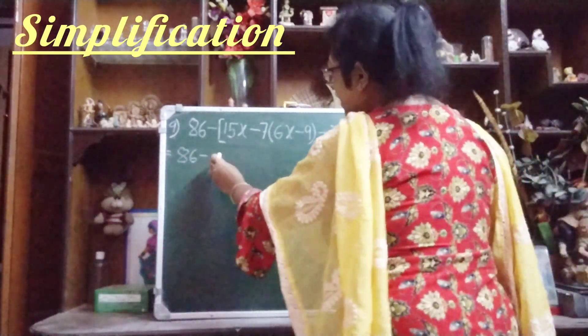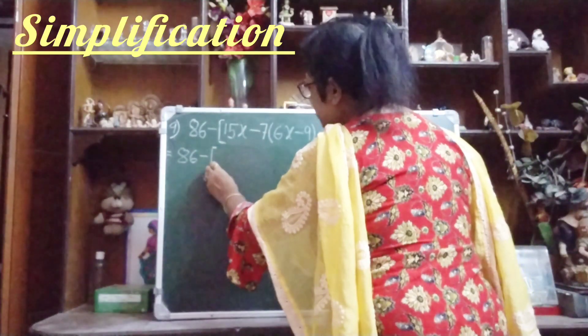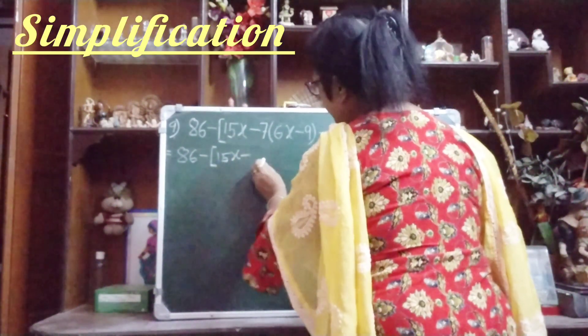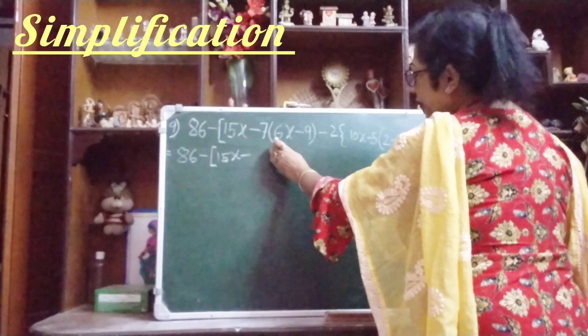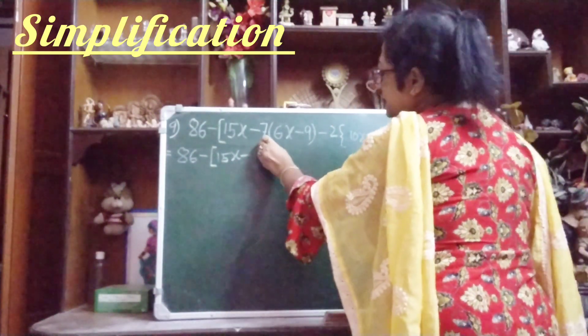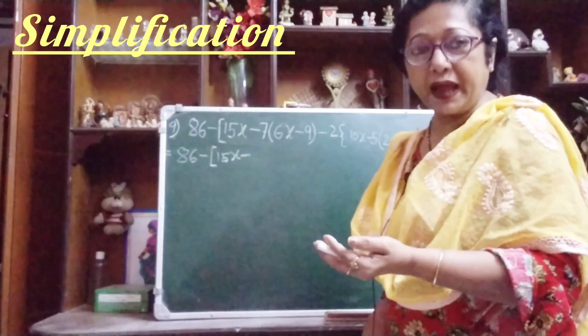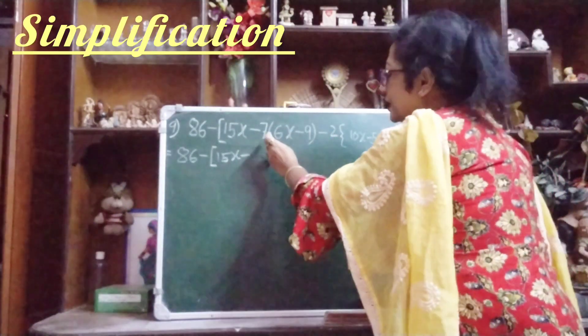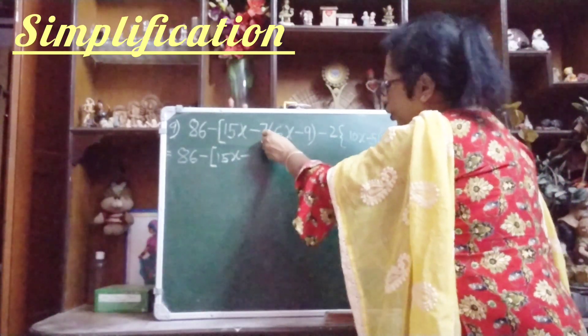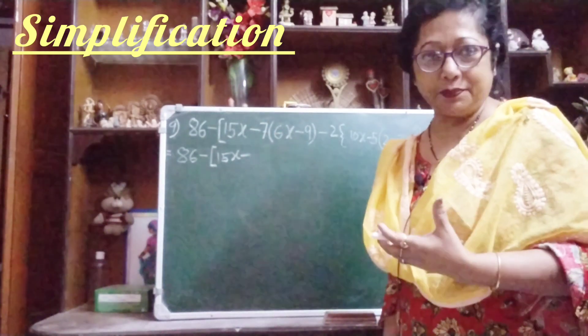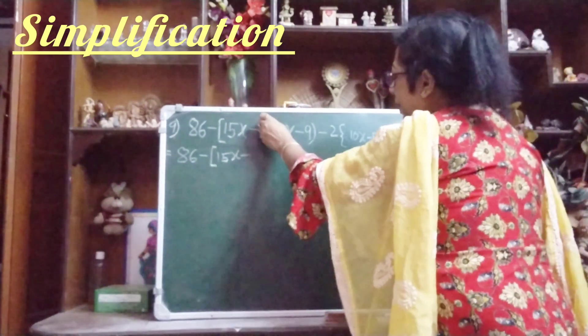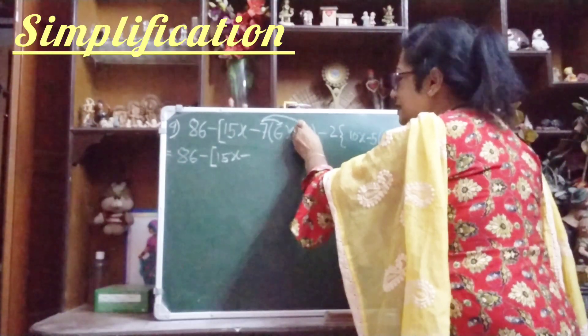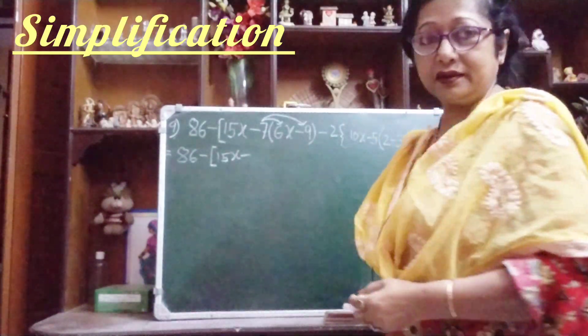So let us start. This is the third bracket, now we will not do this work, so we write 15x as it is. Now children, you see the first bracket has come. Minus 7 is before the bracket and in between no sign is there, means multiply. So you will multiply minus 7 with 6x and minus 7 with minus 9.